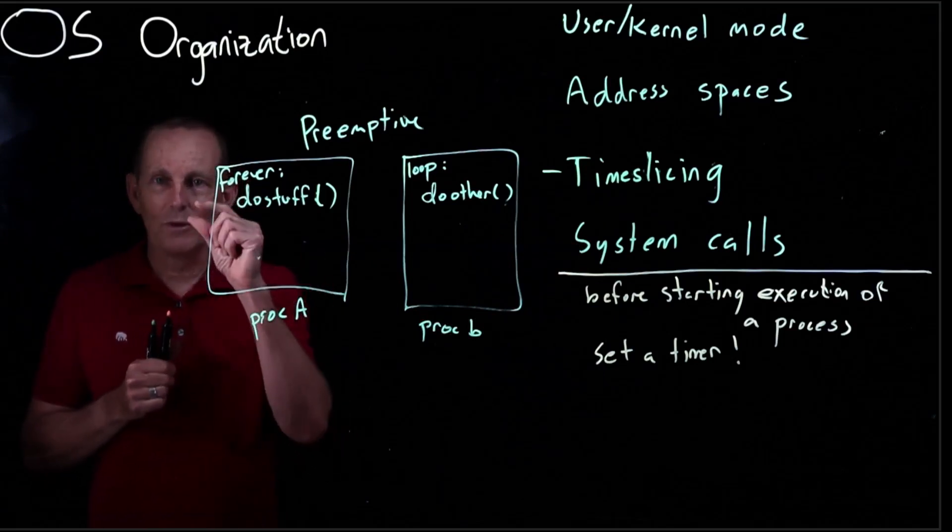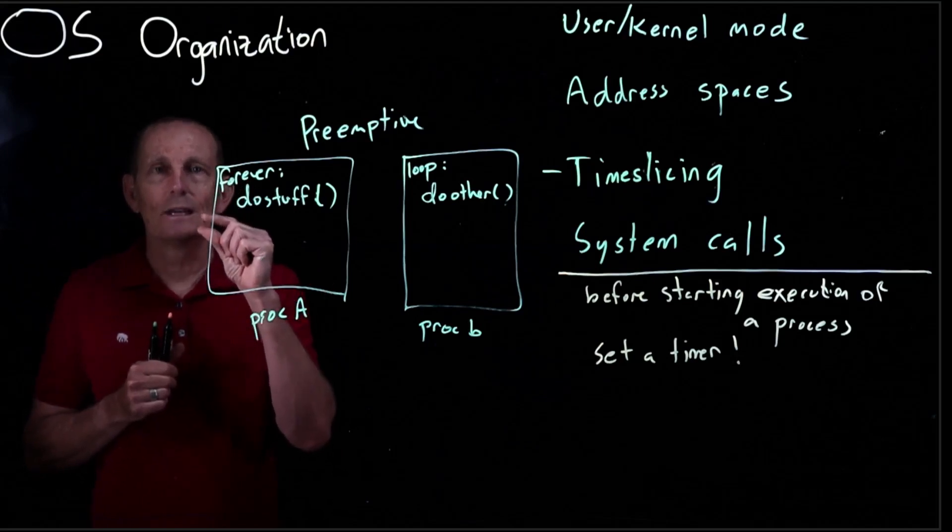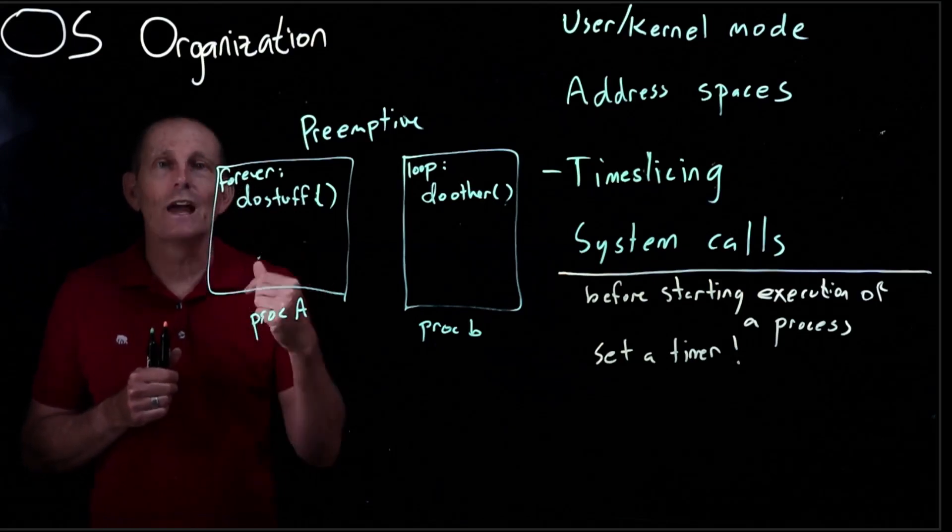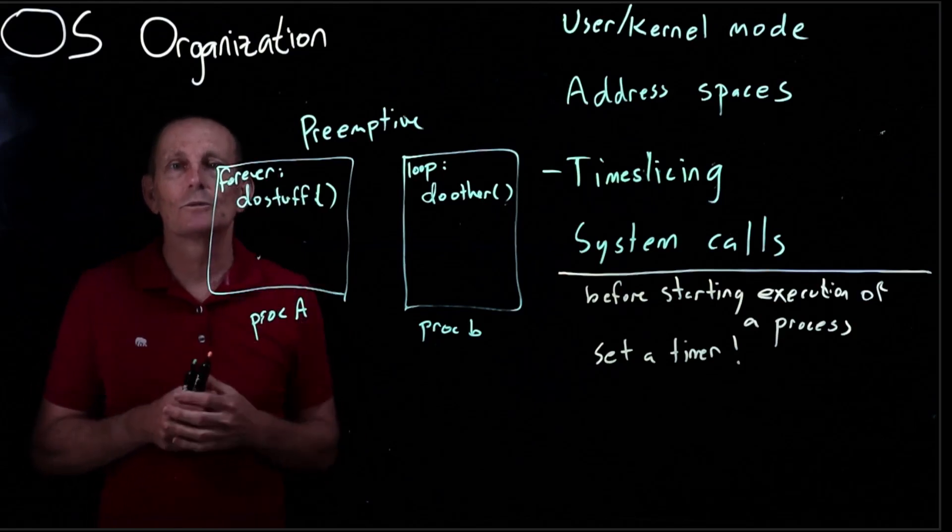The problem of having smaller and smaller quantum is that the overhead of going into the kernel and coming out would be extreme.